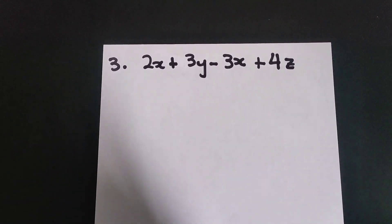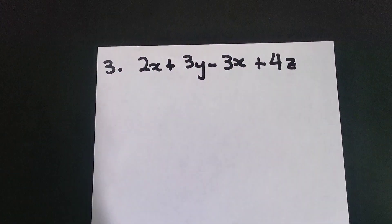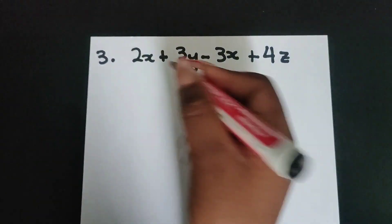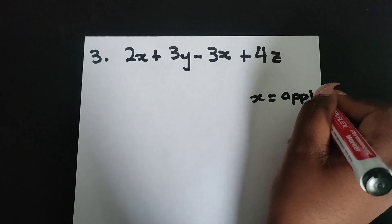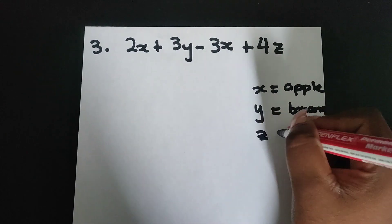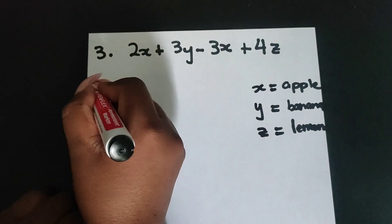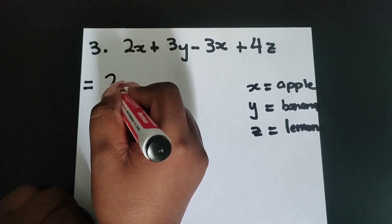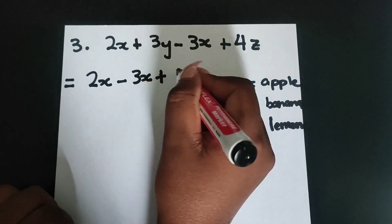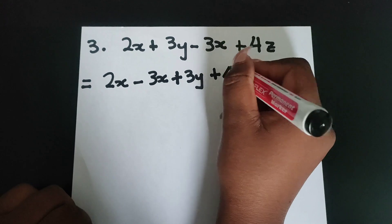So in our third example, we have two x plus three y minus three x plus four z. So we no longer have a, b, c, but even in that case, variables come in different letters. We're just going to consider our x — x is going to be our apple this time. Our y is going to be our banana. And then our z will be our lemon. You can just choose any fruits. So now we put our equal sign and then we put two x, that's our apple. We bring in the other apple, which is negative three x. And then our banana is just one: plus three y. And then for our lemon we only have just this one term, which is four z.